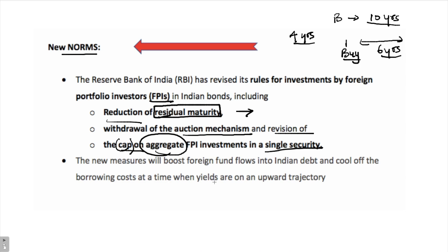What is the purpose of all these new norms pushed forward by RBI? The purpose is to boost foreign fund flows into the Indian debt market. The government wants to cool off borrowing costs, because borrowing costs will reduce when there is more demand for Indian debt from foreign investors, and also to reduce the yields on government securities and other types of securities.